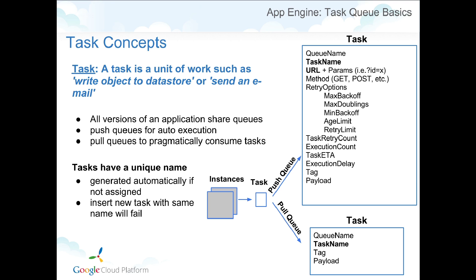All versions of your applications share the same queue. A push queue is really for automatic execution — you push something on a queue and it will immediately execute it. A pull queue is slightly different, where you can put a piece of work on the queue and then take a lease from it by a worker thread that you control, including how fast you pick up those queues and where you pick them up from, whether it's Compute Engine or an on-premise system.